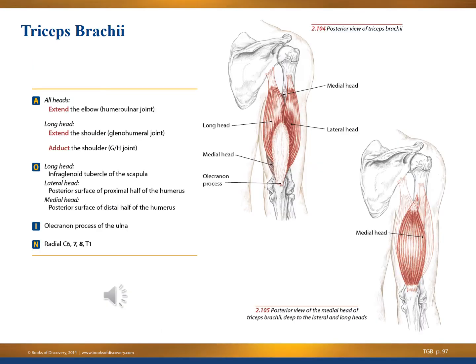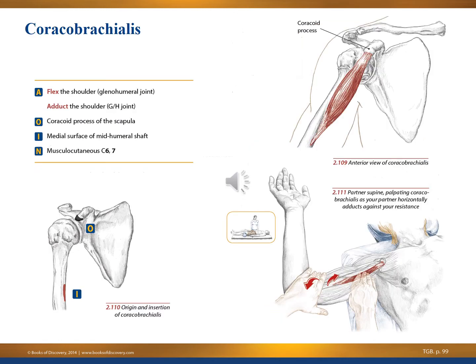The triceps brachii is the reciprocal muscle group to the biceps brachii. Here we have a lovely view of the three heads of the triceps — tri meaning three — pictured just above the olecranon process, which is the elbow joint. The coracobrachialis is a misunderstood muscle. Its major movements are flexion of the shoulder and adduction of the arm — it's located on the medial side of the upper arm and works like the adductors of the leg, bringing that arm back in toward the body.